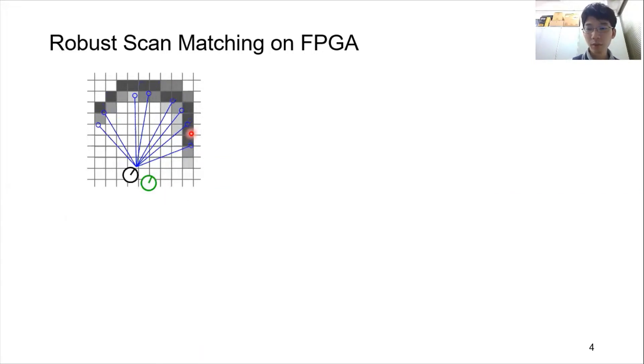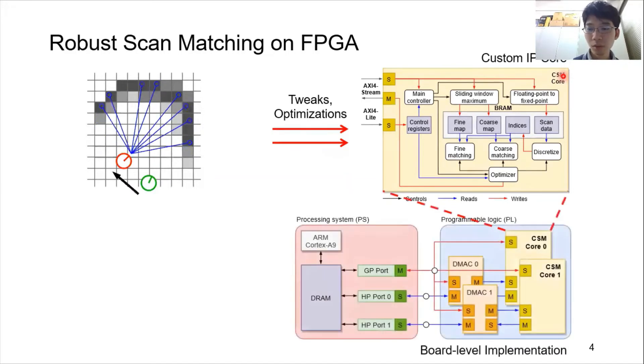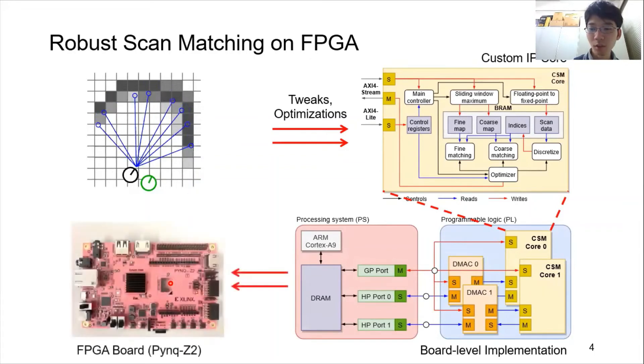We performed some tweaks and optimizations and created a custom IP core for doing this using Vivado HLS. We implemented two IP cores on the FPGA fabric and our design is integrated into particle filter-based and graph-based SLAM.